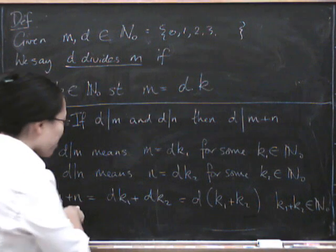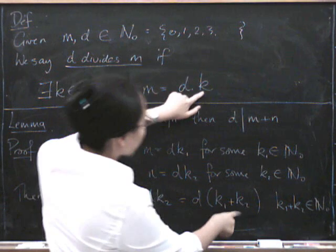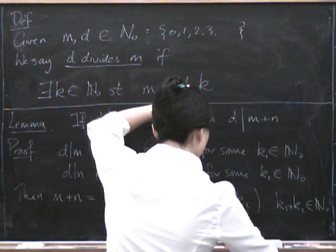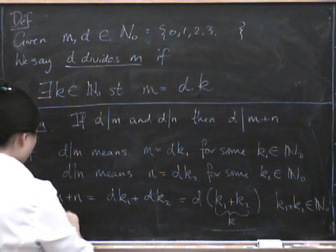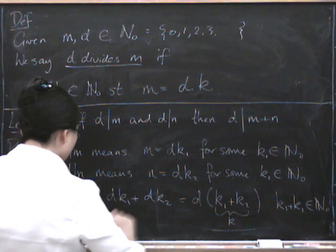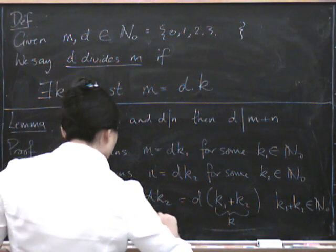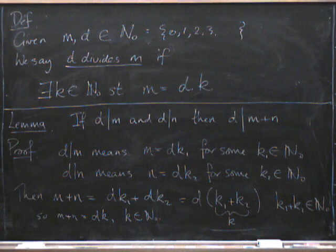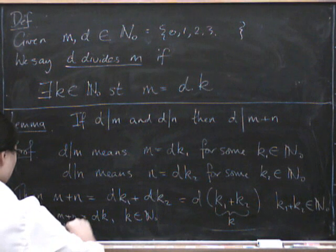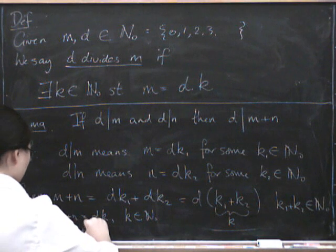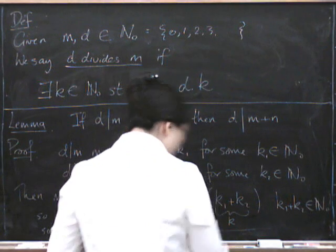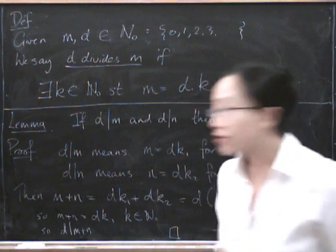So we have got M plus N into the form D multiplied by some K. So if we call that K, then we've got M plus N equals DK with K in the natural numbers. So we're done because that's the definition. So D does indeed divide M plus N. And I can write a little box around it to denote I've got to the end.